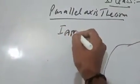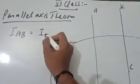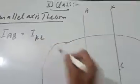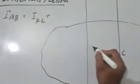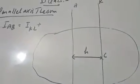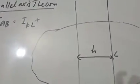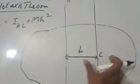...about the given axis is a product of the mass of the particles with the square of the distance between them — that is, the product of the total mass of the body with the square of the perpendicular distance between the two parallel axes.